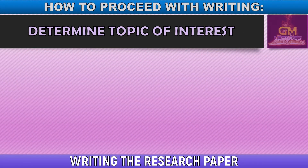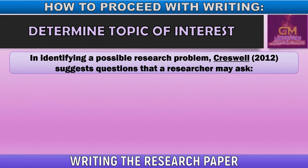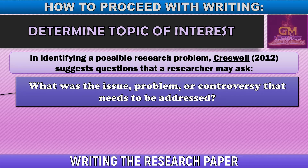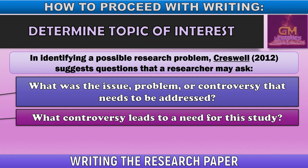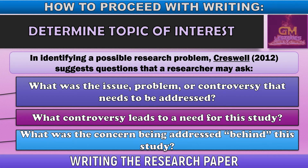Let's talk about the first step: determining the topic of interest. In identifying a possible research problem, Cresswell in 2012 suggests asking: What was the issue, problem, or controversy that needs to be addressed? What controversy leads to a need for this particular study? And what was the concern being addressed behind this study? When searching for a topic, it must be based on a question that needs answering, an issue that needs solving, a problem that needs addressing, and it must be based on your own interest.